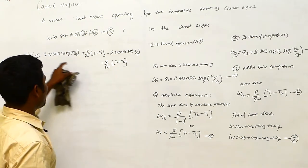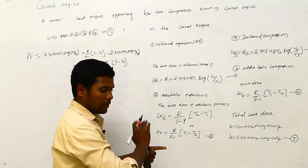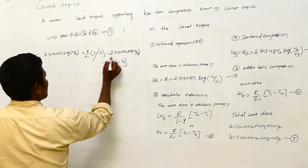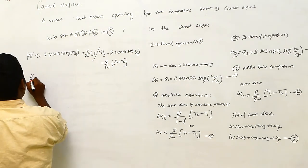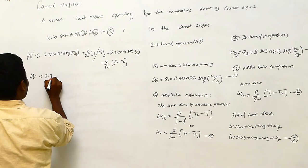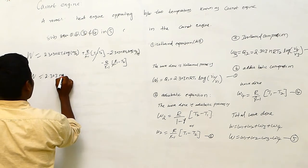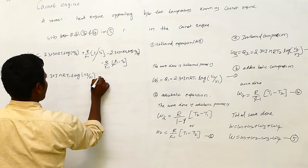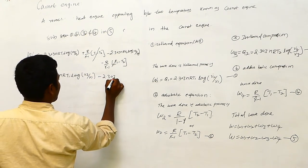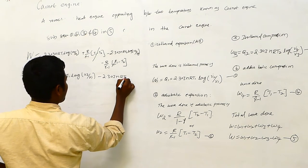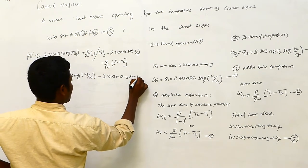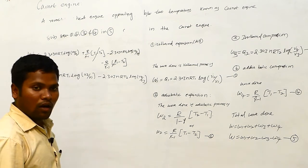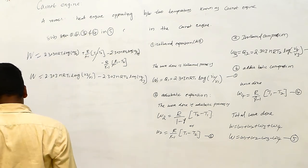The total work W equals the sum over all curves: AB curve, BC curve, CD curve, and DA curve. Two terms from the adiabatic processes are equal and opposite, so they cancel. The remaining total work done in the Carnot engine simplifies, and next we want to find the efficiency.